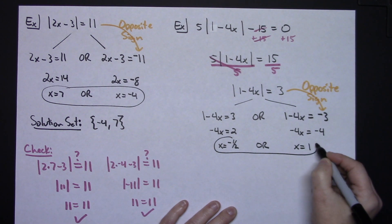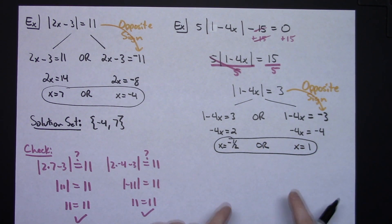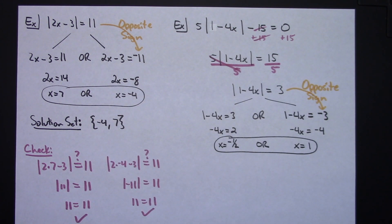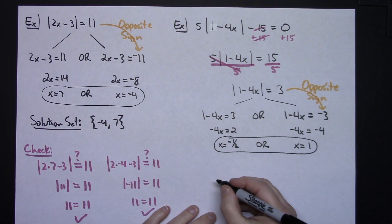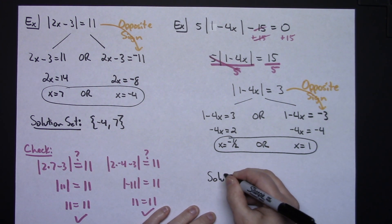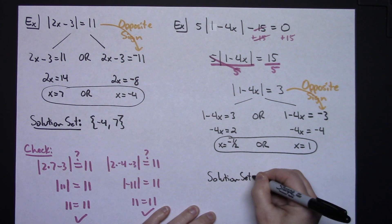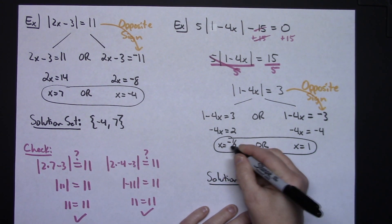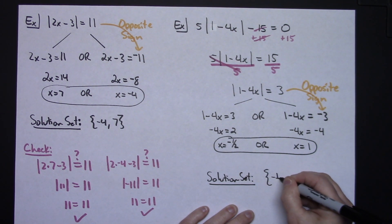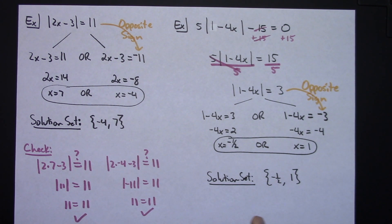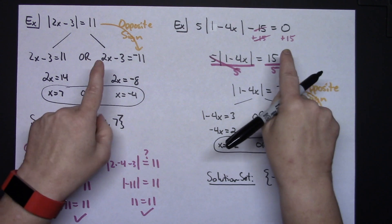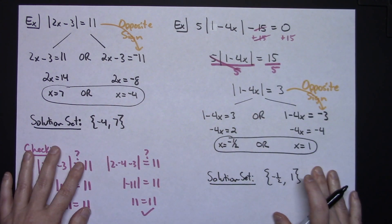Depending on what your teacher requires, x equals negative one-half or x equals 1 may be an acceptable answer. You should check both values in the original equation to verify they work — they do. If you need to write the answer as a solution set, it would be {negative one-half, 1}, with the smaller number listed first. These are two straightforward examples where you had a positive number on the right-hand side.